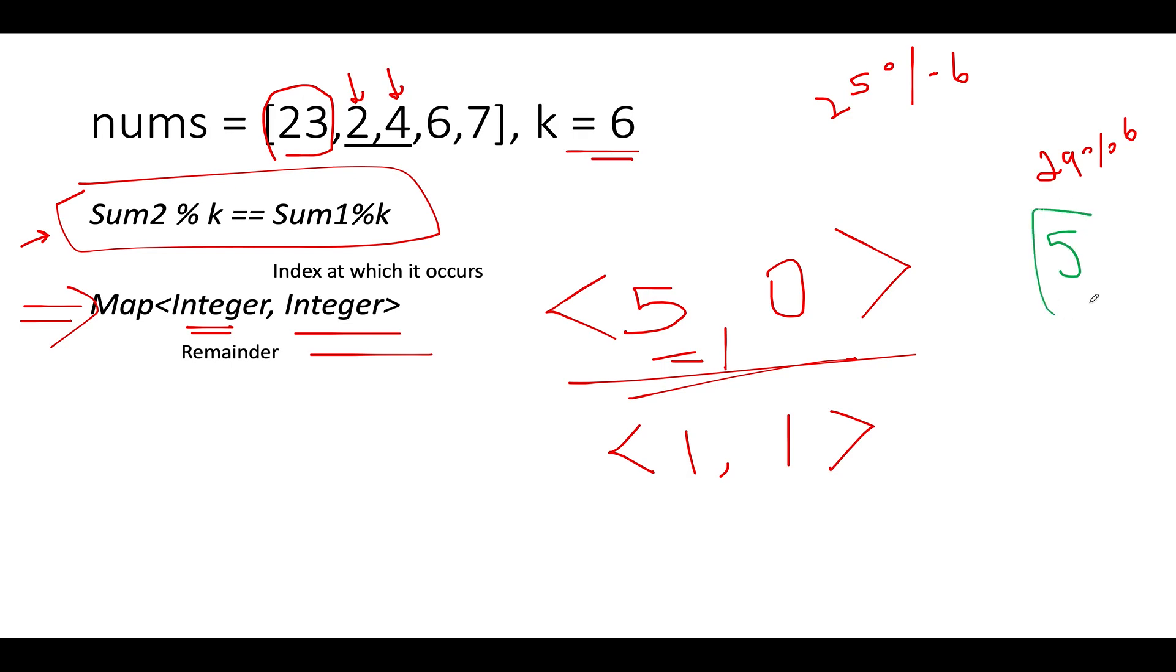You get 5. Is 5 part of the map? Yes, 5 is already part of the map. We have already seen the remainder 5 in the past and it occurs at the 0th index. Which index are we currently at? We are currently at the 2nd index.